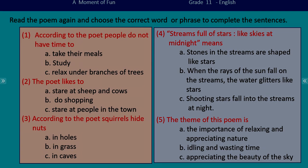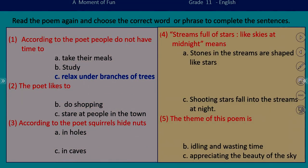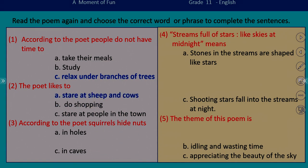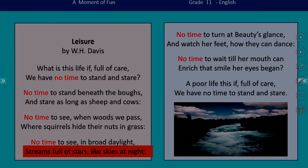I hope you have completed the activity. Let's see your answers. We have already done the first one. The poet likes to stare at sheep and cows. In the poem we have the same line — 'stare as long as sheep and cows' — which gives you the clue to arrive at the answer.